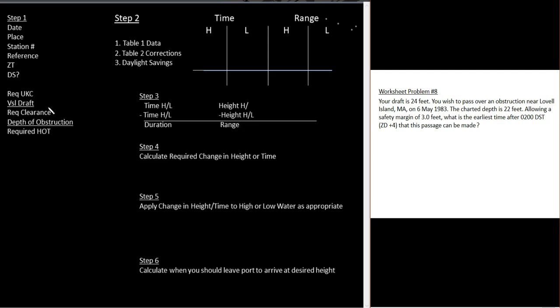We're just going to grab each little bit and put it where it belongs. So the draft of the vessel is 24 feet, so here's vessel draft. I'm just going to put 24 there. I wish to pass over an obstruction near Lovell Island, Maine, so the place is Lovell Island. And it's May 6th, so I'll put that up here.